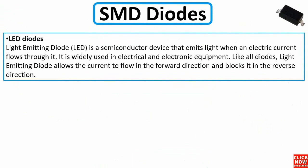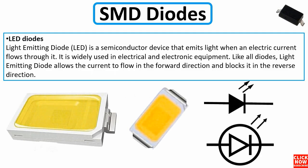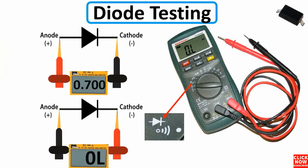An LED, or light-emitting diode, is a semiconductor device that emits light when an electric current flows through it. It is widely used in electrical and electronic equipment. Like all diodes, an LED allows current to flow in the forward direction and blocks it in the reverse direction. Its symbol features two arrows indicating light emission.